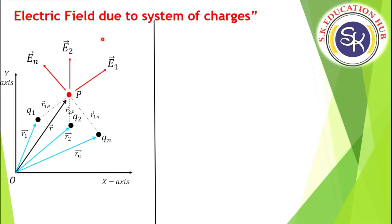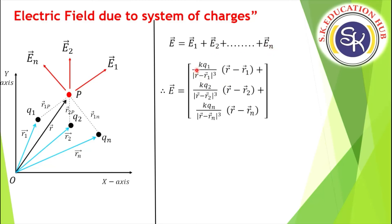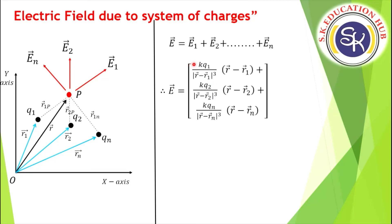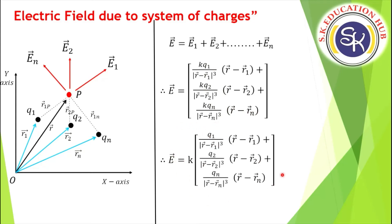Since electric field is also a vector quantity, we can apply the superposition principle. So E = E1 + E2 + ... + En. Using the equation kq/r² times r-hat from previous lectures — and noting that r-hat equals r-vector divided by its magnitude, making r² become r³ in the denominator — the total field is: E = k[q1(r − r1)/|r − r1|³ + q2(r − r2)/|r − r2|³ + ... + qn(r − rn)/|r − rn|³]. You can factor k outside. This is the equation for electric field due to a system of charges.